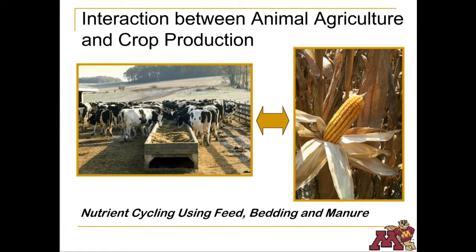Historically, there's been a very tight relationship between crops grown and livestock produced, but as transportation systems continue to improve, it's become easier to move feed to the animals and move animals to areas best suited for them.